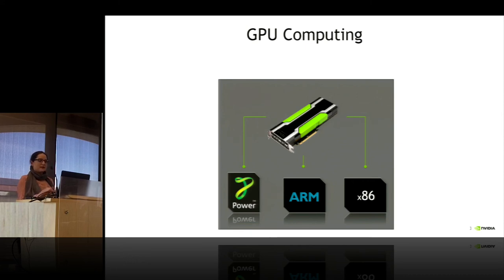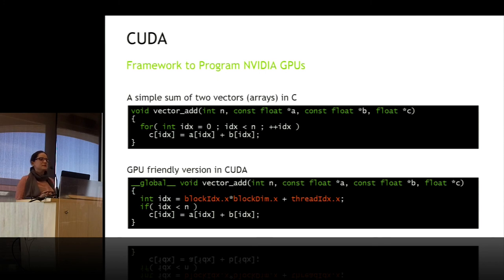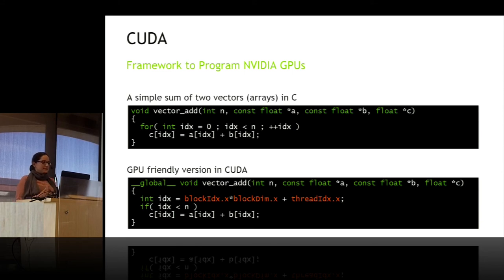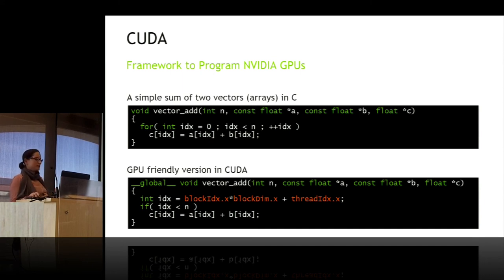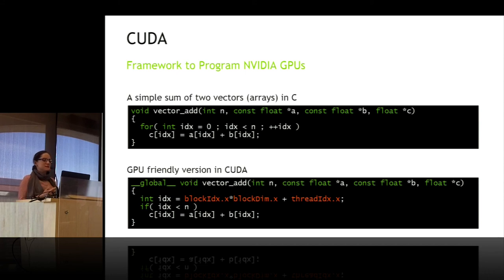The way we address that is by approaching the software stack and the framework to program NVIDIA GPUs. We do it through CUDA, which is the framework for the NVIDIA GPU, and the idea behind it is to have something as simple as C. You have the simple sum of two vectors in C, and you have the GPU version in CUDA — it's intended to be as simple and as similar as possible.